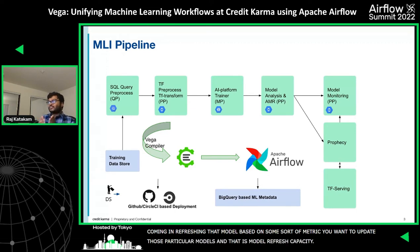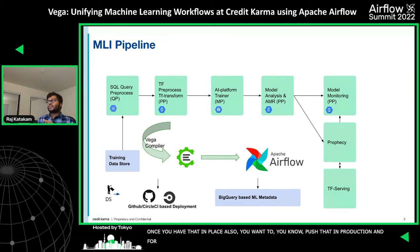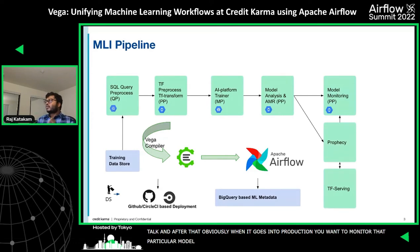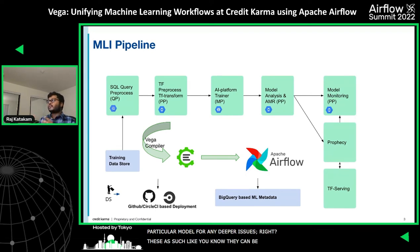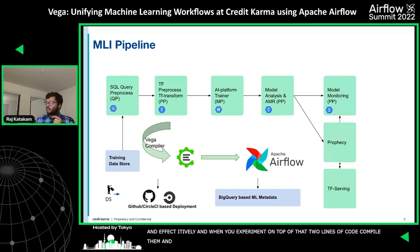Once you have that in place, you would want to push to production. For us, the serving ecosystem is Prophecy, which we won't get into much in this talk. After it goes into production, you would obviously want to monitor those particular models for any kinds of degradation or issues. All of these assets can be plugged into this bigger framework quite easily and effectively. Once you've experimented with a bunch of things, within one or two lines of code you can compile them and get an Airflow DAG. These cover all our production ecosystems.